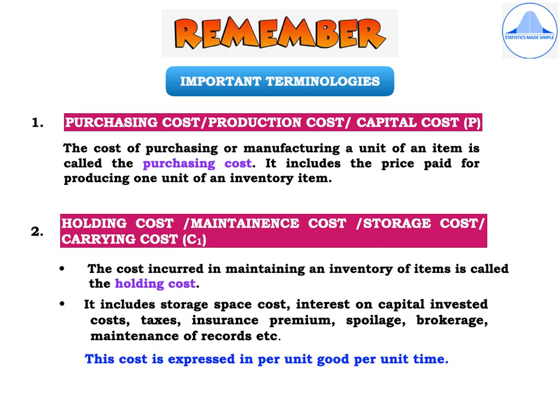I will now explain the important terminologies and notations used in the inventory chapter. First is the purchasing cost, also called the production cost or the capital cost, denoted by P. The cost of purchasing or manufacturing a unit of an item is called the purchasing cost. It includes the price paid for producing one unit of an inventory item.